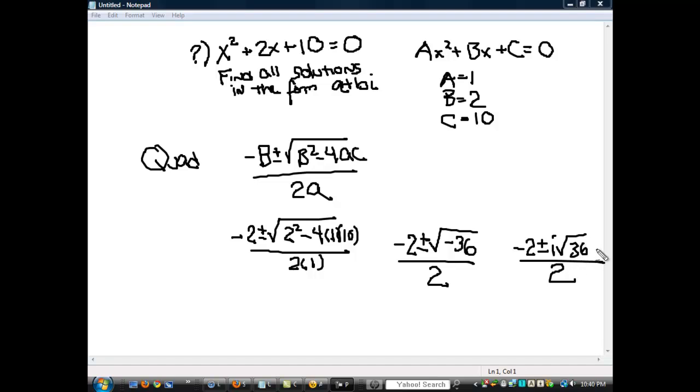Now the square root of 36 is 6, so this is negative 2 plus or minus 6i, over 2. So there's two solutions.